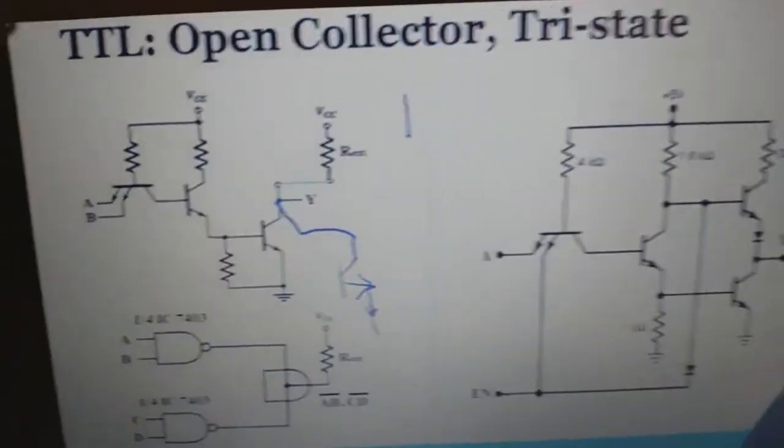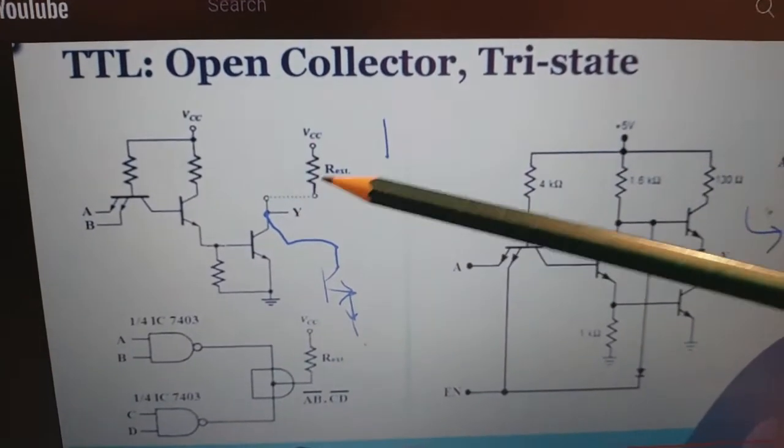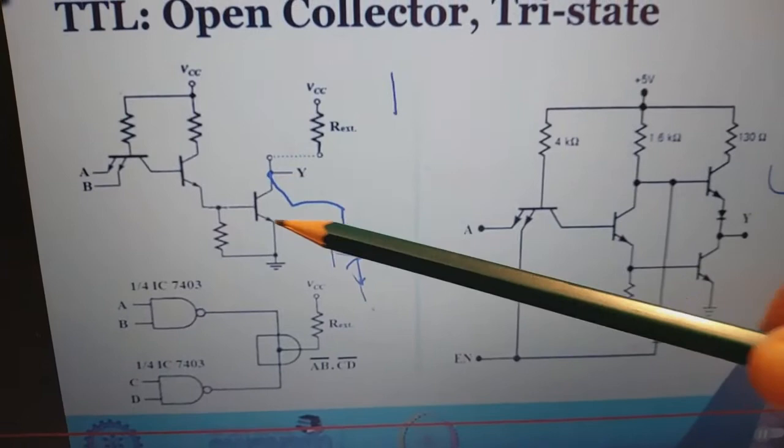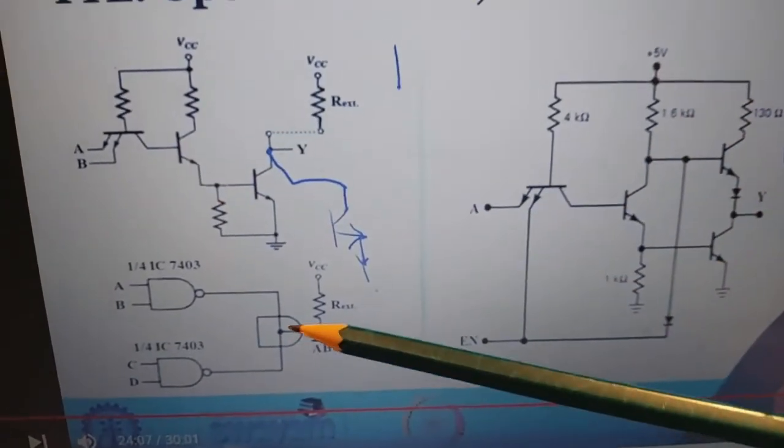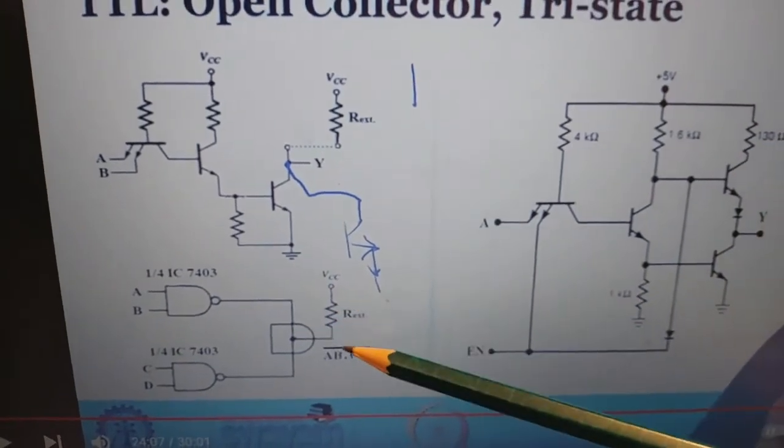So we keep the collector terminal open and we decide which resistor we want. Then we can connect the other circuit to give AND operation. So just wiring or tying them together will result in an AND logic, but this is not allowed in totem pole.